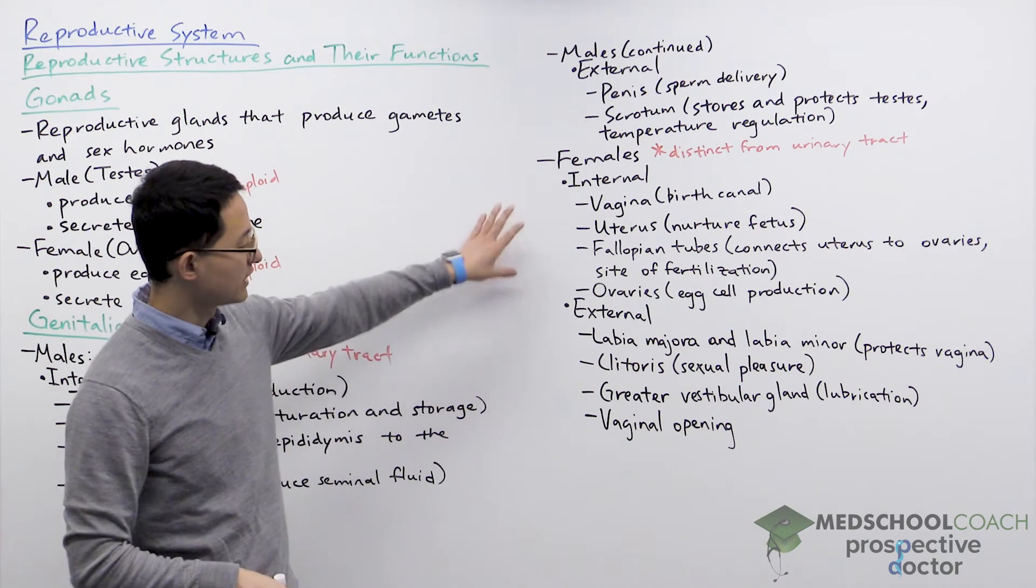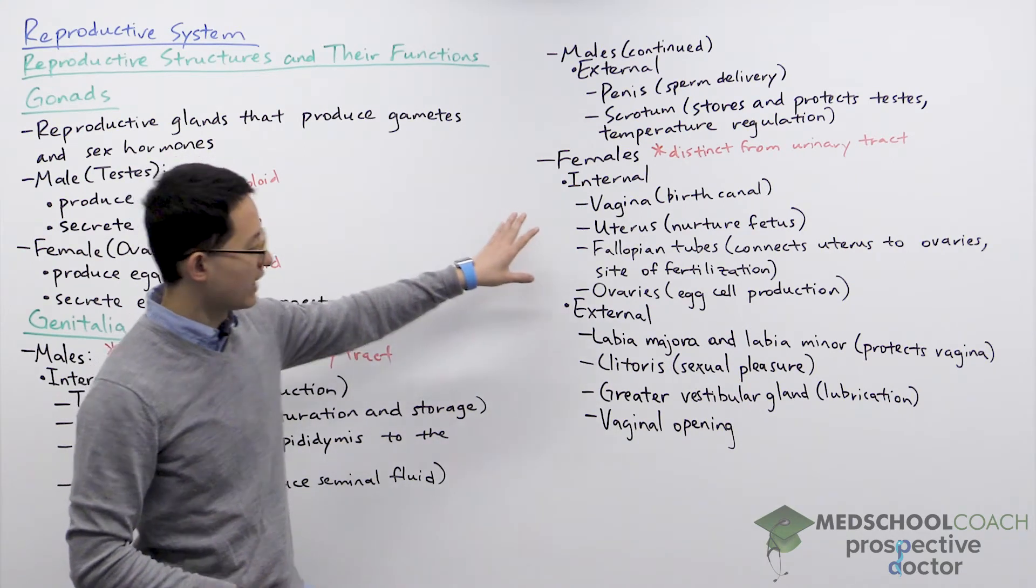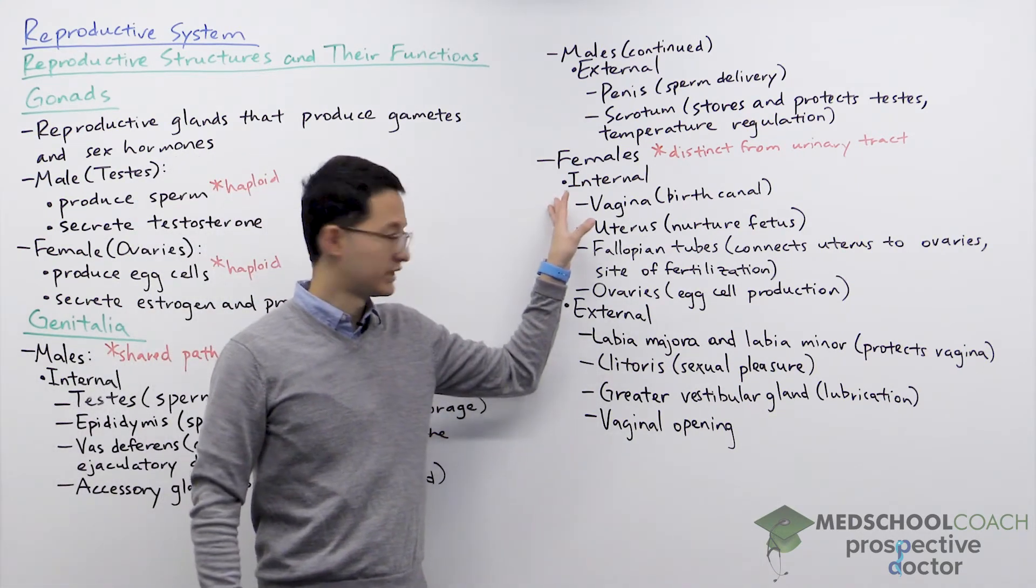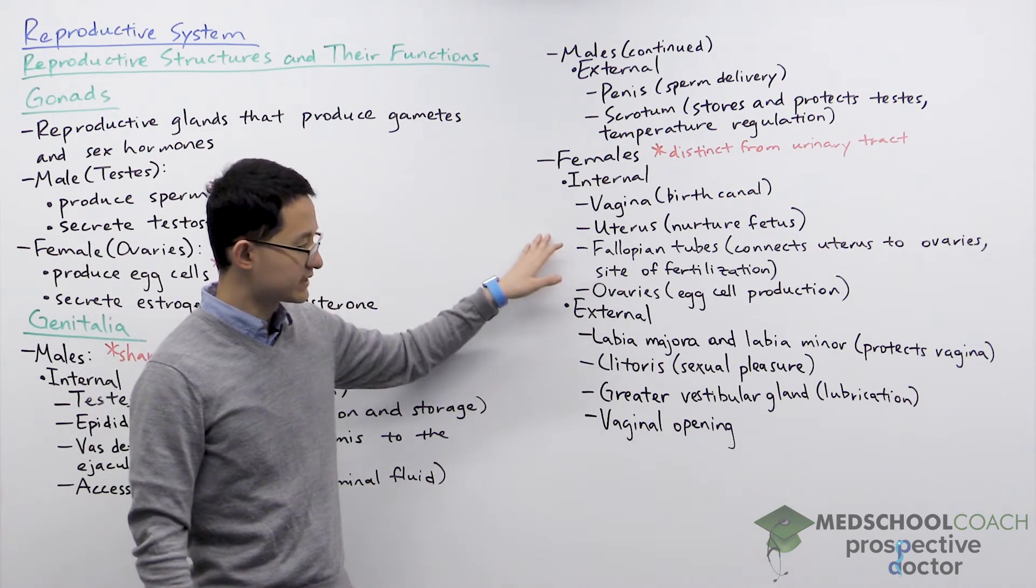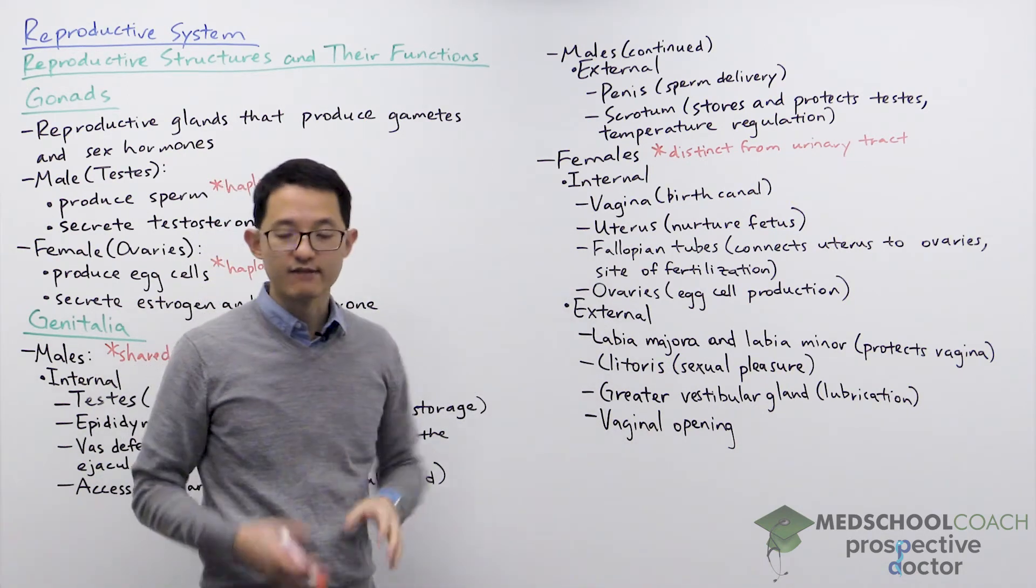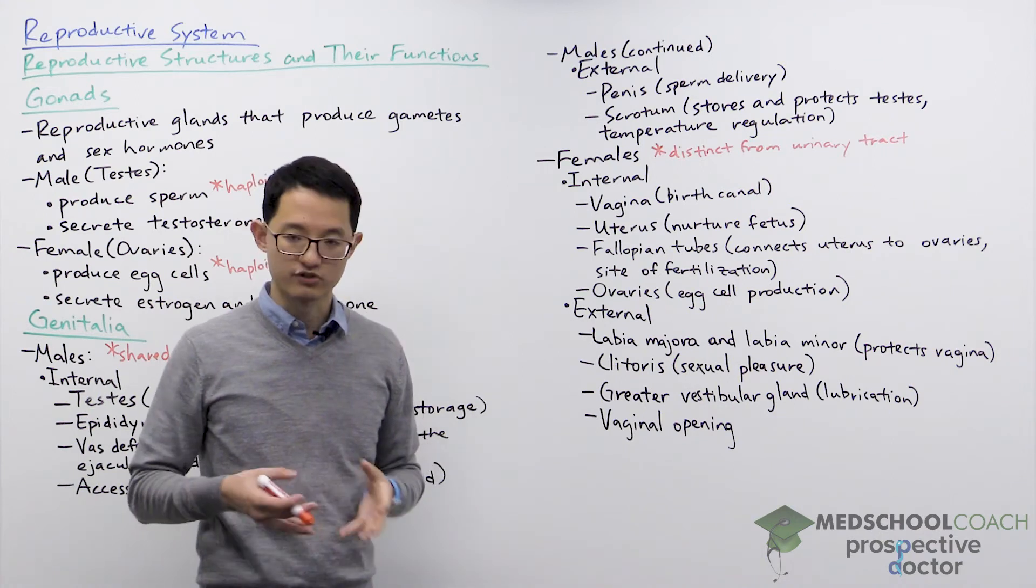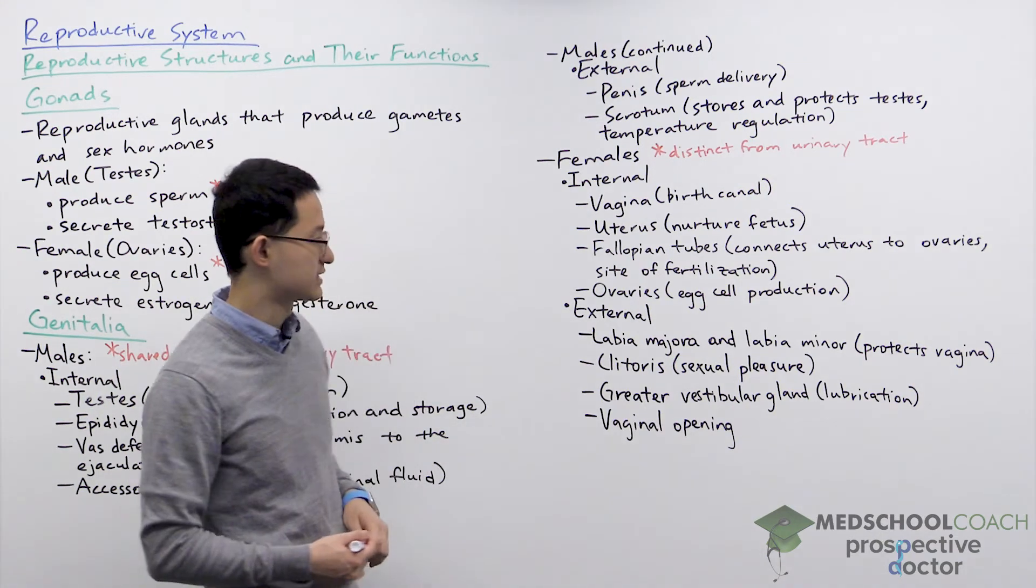With females, the internal structures include the vagina, which is the birth canal. You have the uterus. The vagina is connected to the uterus. The uterus is the major structure within females which is ultimately going to house and nurture the developing fetus.